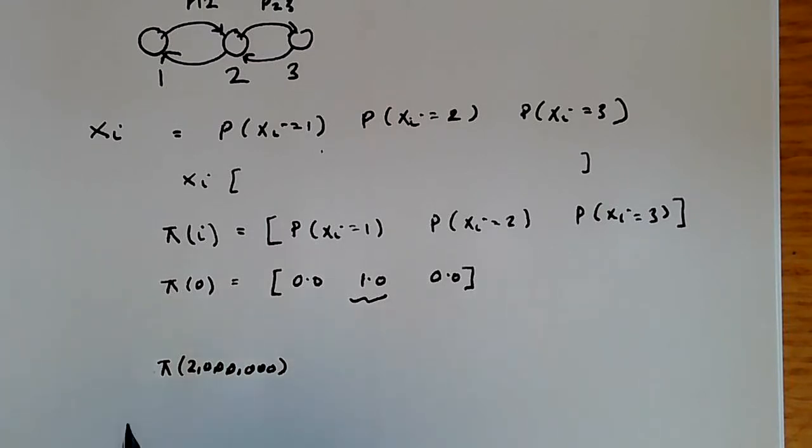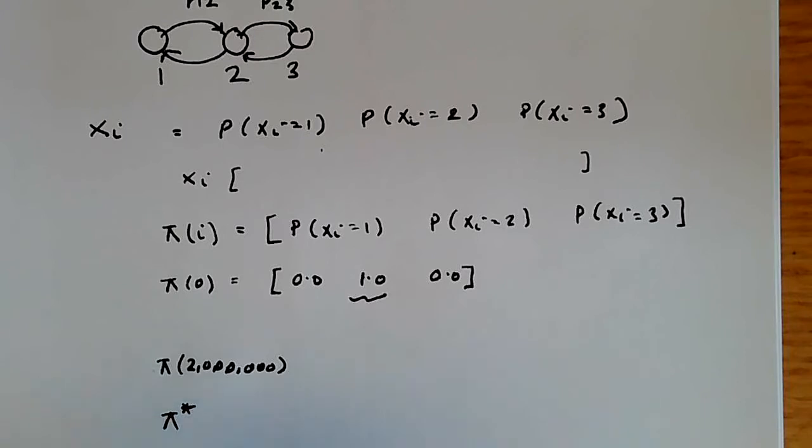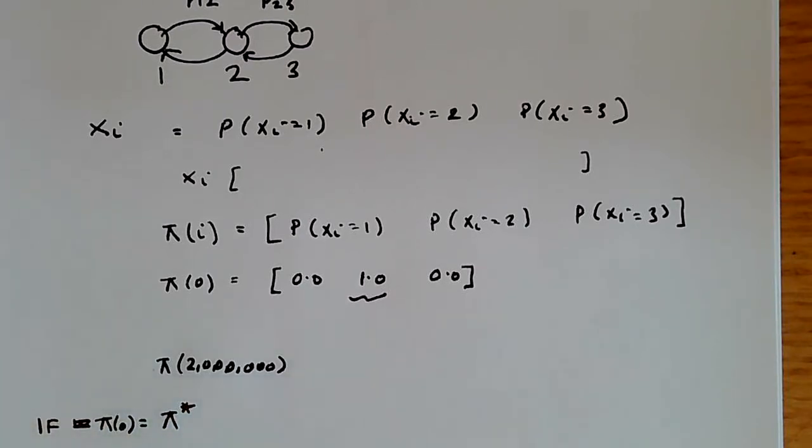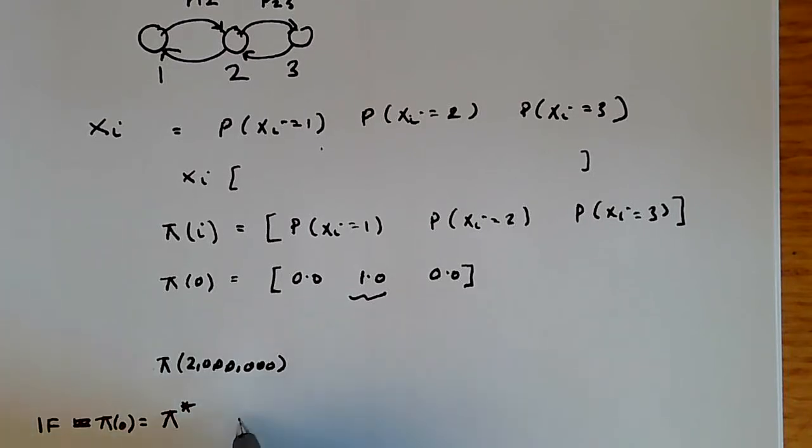So, let's introduce this specific stationary probability distribution. We call that π*. And π* has the property that if π_0 equals π*, so that means if the initial state is π*, then for all n,